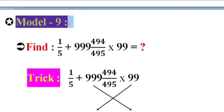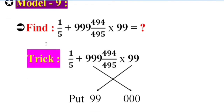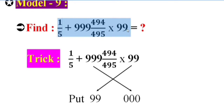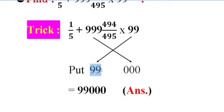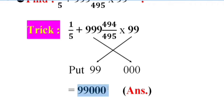Model 9. Find 1 by 5 plus triple 9 and 494 by 495 into 99 equal what? Trick: put 99, 99 means this 99, and triple zero means this triple 9. Answer: 99 triple 0.